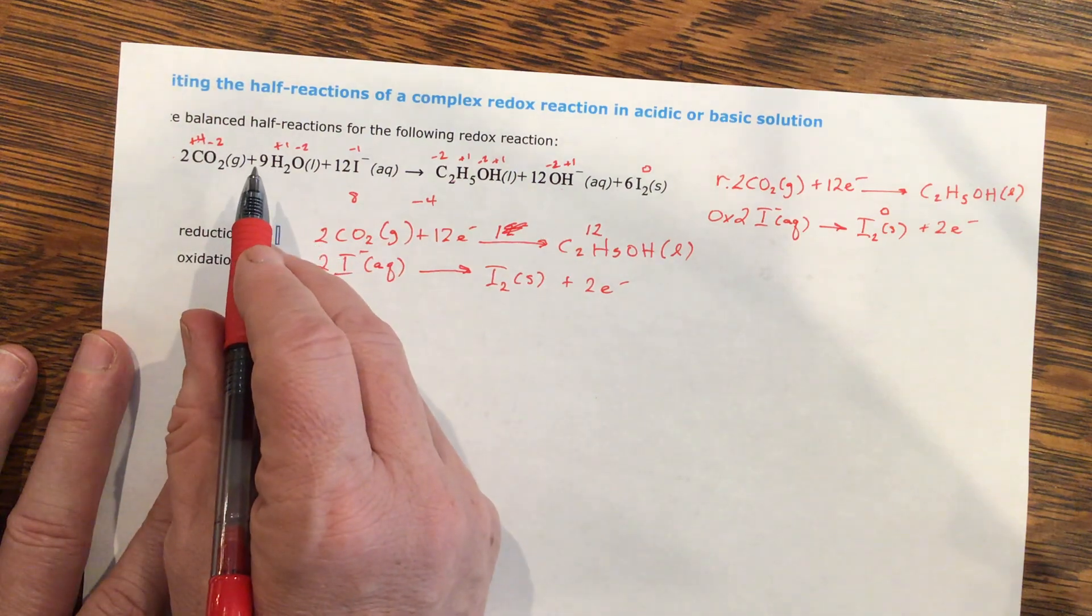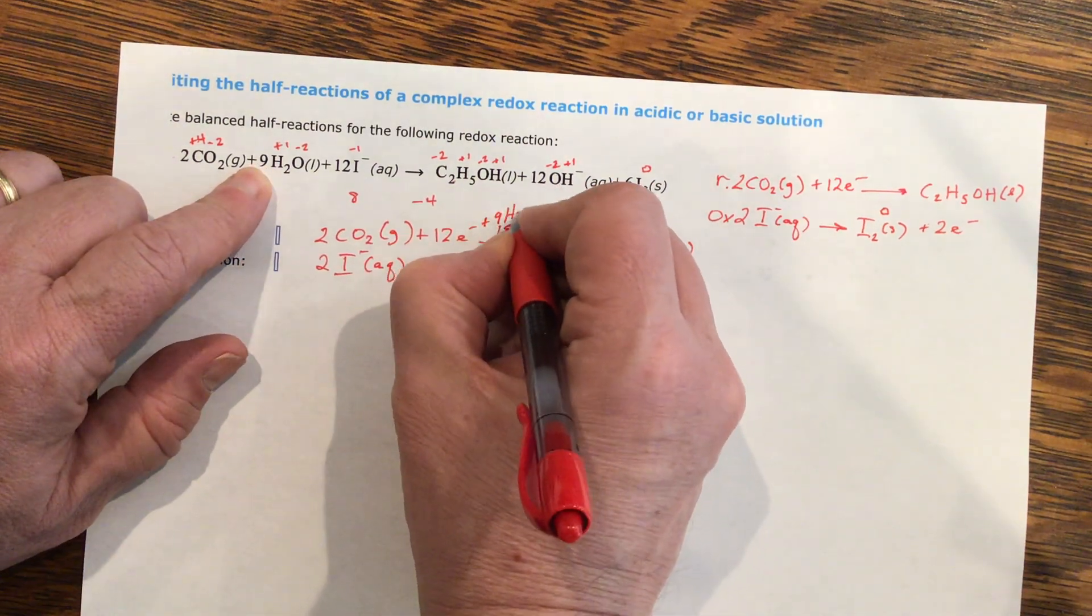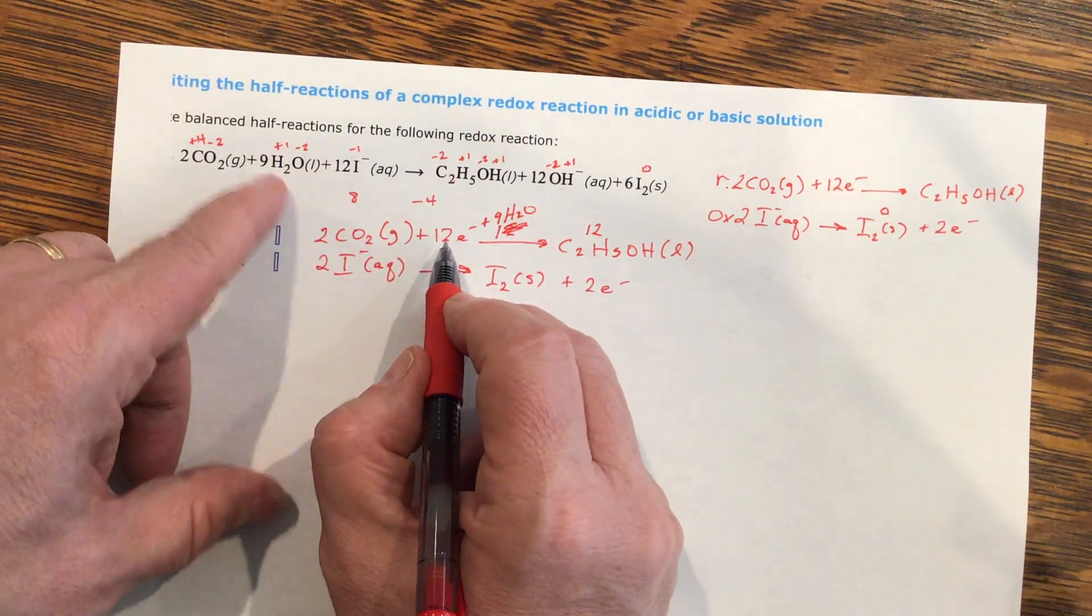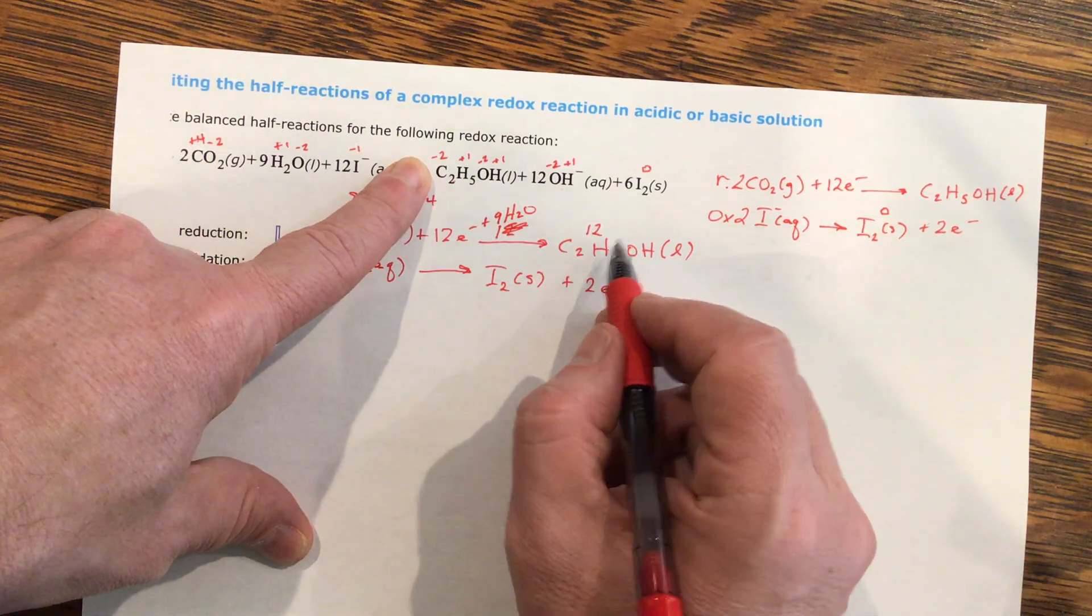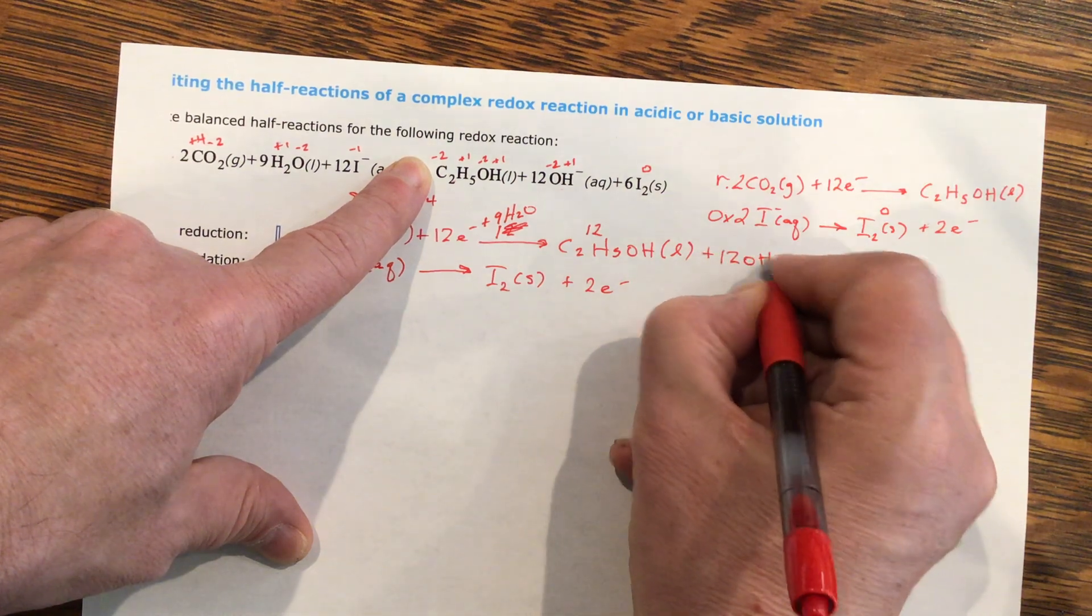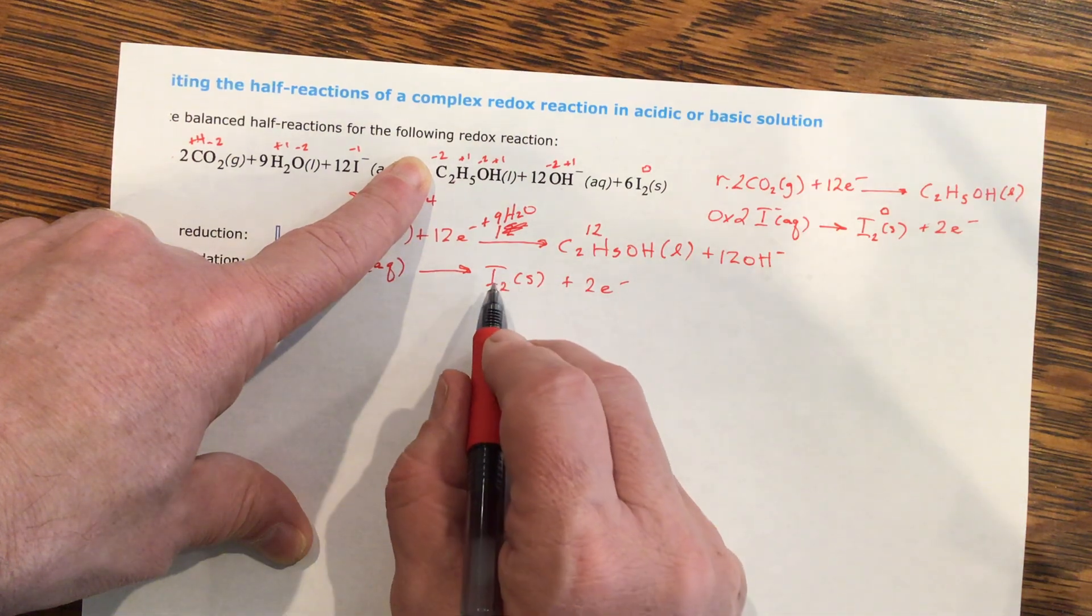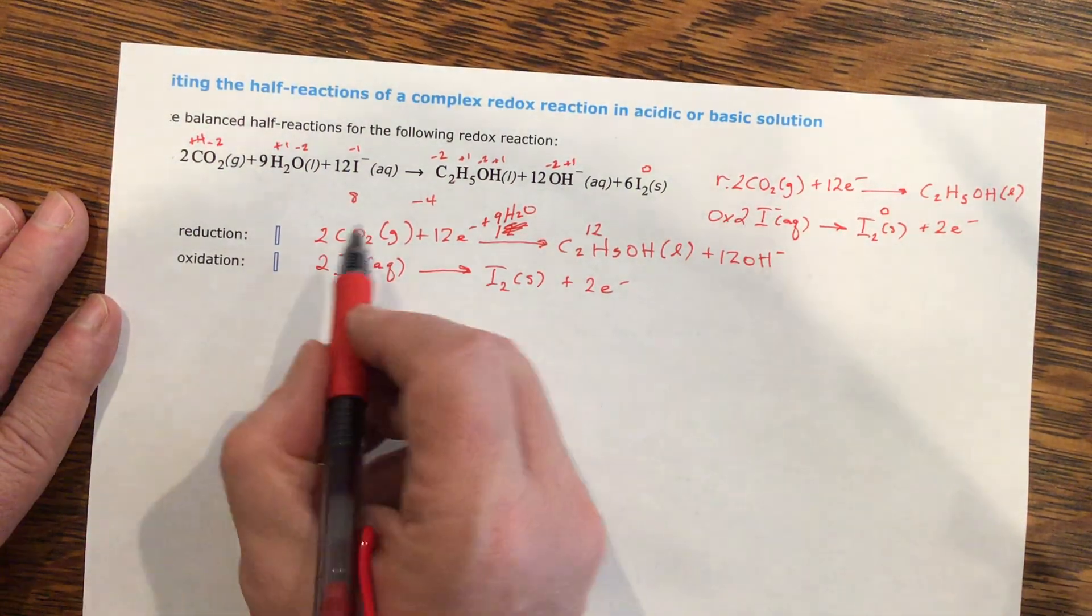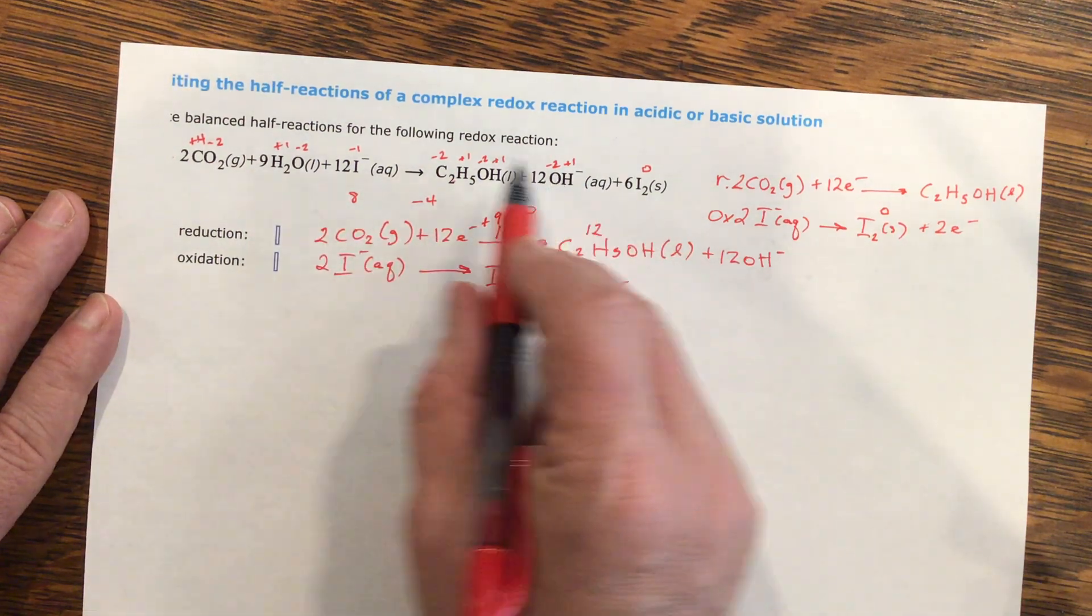Nine H2O's. So I've got the carbon dioxide, I've got the water, I've got the iodines. All this is on this side. On this side, I've got the alcohol. I need 12 OHs. And I've got the iodines here. So I've separated them.